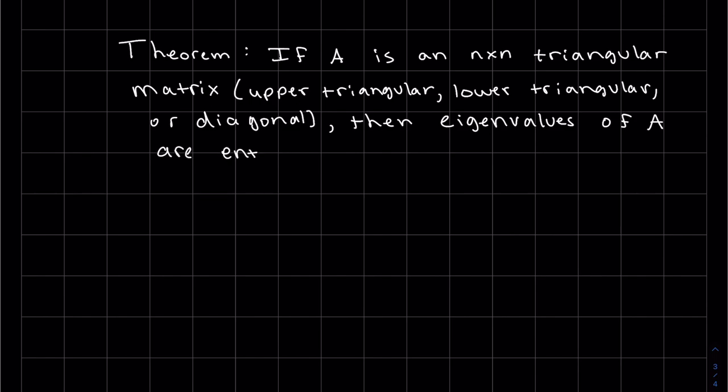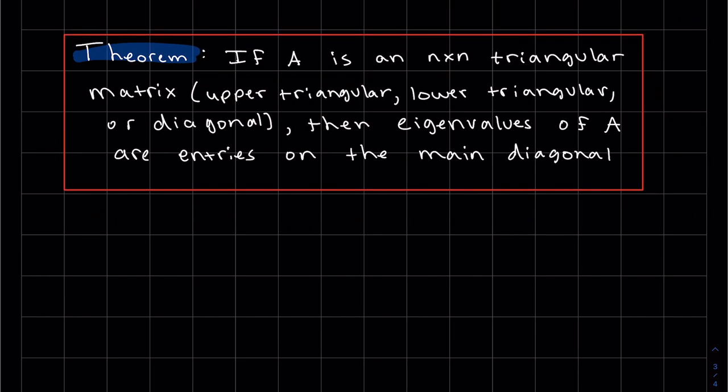So one more theorem before we're done. So this theorem says that if A is an n-by-n triangular matrix, and it could be either of these. It could be an upper triangular, a lower triangular, or even just a diagonal matrix. They're all triangular matrices. Then eigenvalues of A are the entries on the main diagonal. So let's just look at an example.